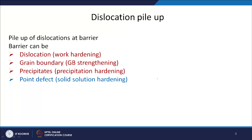The barrier can be another dislocation — if the barrier is another dislocation and strengthening results, it is called work hardening, due to dislocation-dislocation interaction. If the barrier is a grain boundary, it is called grain boundary strengthening. If the barrier is precipitates, it is called precipitation hardening. If the barrier is a point defect, it is called solid solution hardening. We will see each one of them.